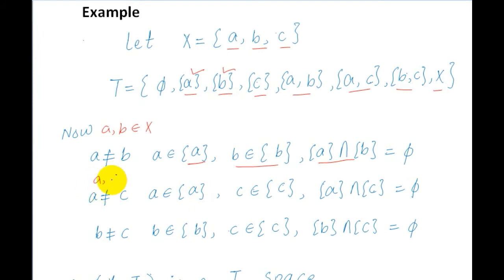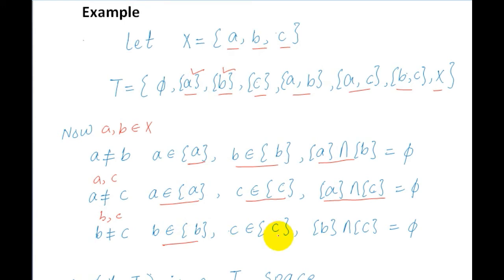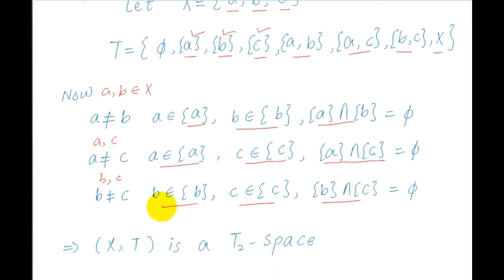Similarly, for A and C: A not equal to C means two distinct points. A belongs to {A}, C belongs to {C}, and {A} intersection {C} is equal to the empty set. For B and C: B not equal to C, B belongs to {B}, C belongs to {C}, and {B} intersection {C} is equal to the empty set. So for every pair of distinct elements in X, we have disjoint open sets containing each element. This implies X is a T2 space.